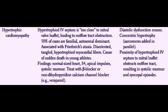One of the rarer forms of cardiomyopathy is hypertrophic cardiomyopathy. The classic form involves the interventricular septum. In patients with symptomatic hypertrophic cardiomyopathy, the interventricular septum is too close to the mitral valve leaflet, and this leads to outflow tract obstruction, so-called hypertrophic obstructive cardiomyopathy, or HOCM.